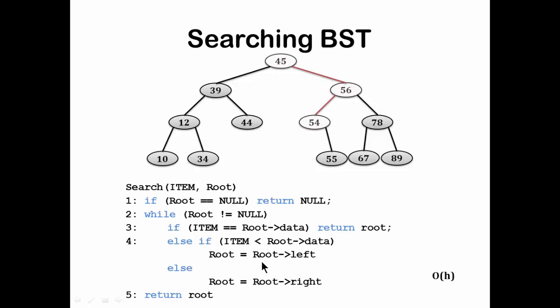For example, searching for 54: root is not null, so while condition is true. Item equals root data is false; item less than root data is also false because 54 is greater than 45. So the else condition is followed and you go to root right, reaching 56. At 56, item 54 is less than 56, so root left is executed. At 54, item equals root data is true and you return that node. The complexity is order of h.